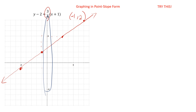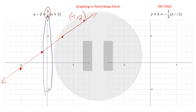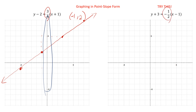Try one yourself: y plus 3 equals negative 1 half times x minus 1. Don't forget to switch those signs on your point. Pause it and start it up again when you've graphed. Our slope is negative 1 half. For our point: x minus 1 gives positive 1, and y plus 3 gives negative 3. So our starting point is 1 comma negative 3. From there, go down 1 over 2 repeatedly, or up 1 backwards 2. It all falls on the same line — the more points you graph, the easier it is to draw a straight line.